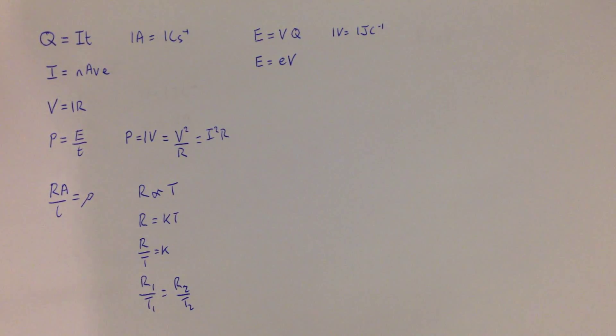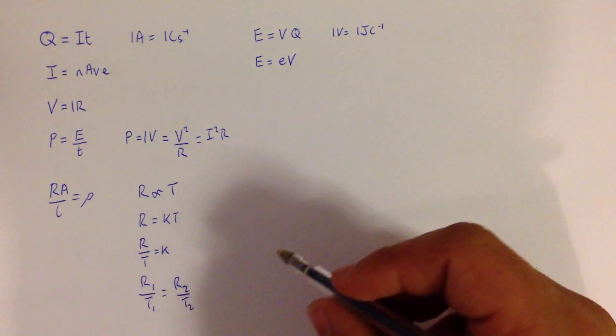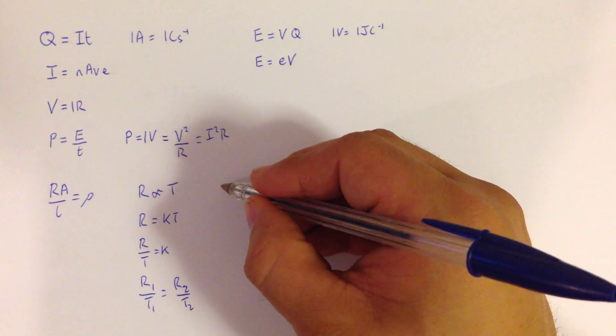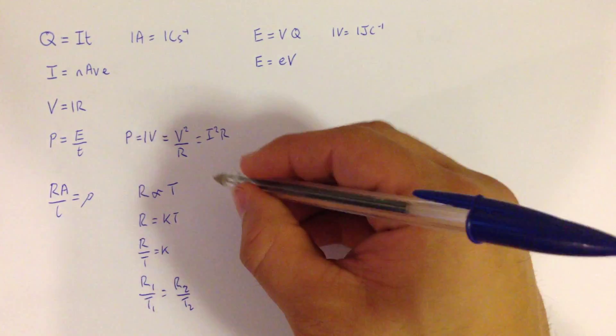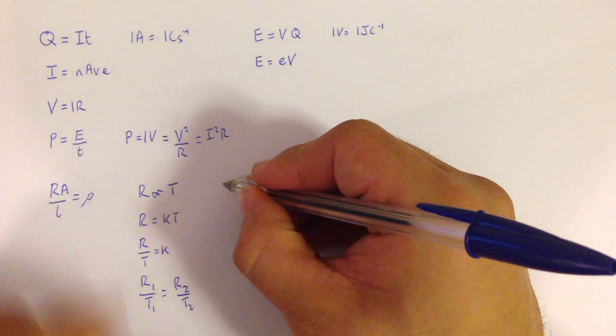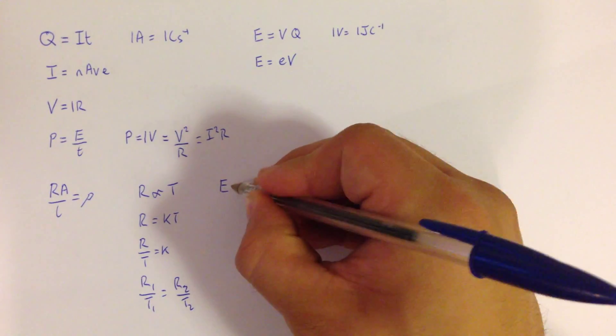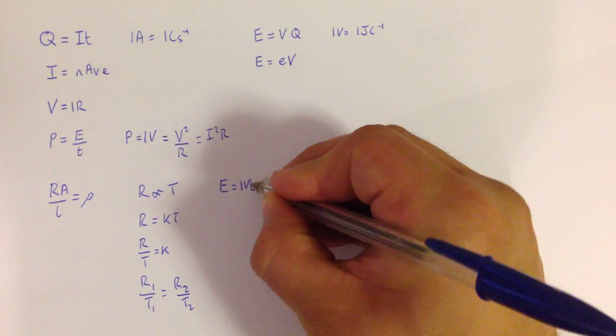The only other equation that can come out of this from module 2 is that we can rearrange power with PIV to get a new equation for work done or energy, which is that that is PIV multiplied by time, which is just a rearrangement.